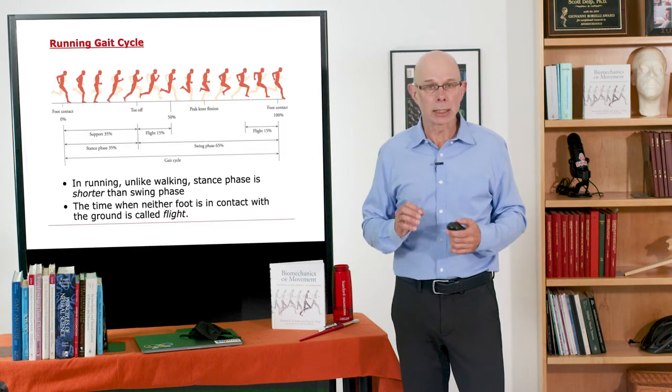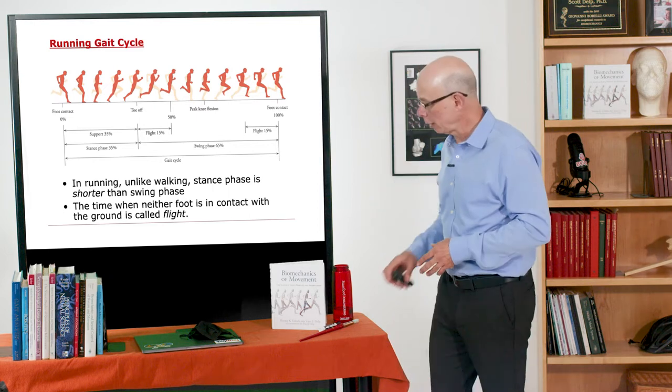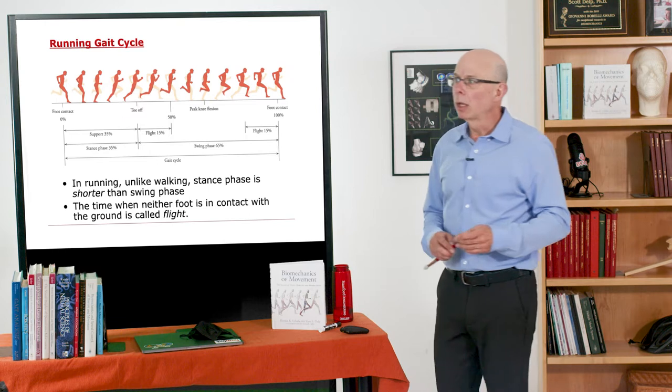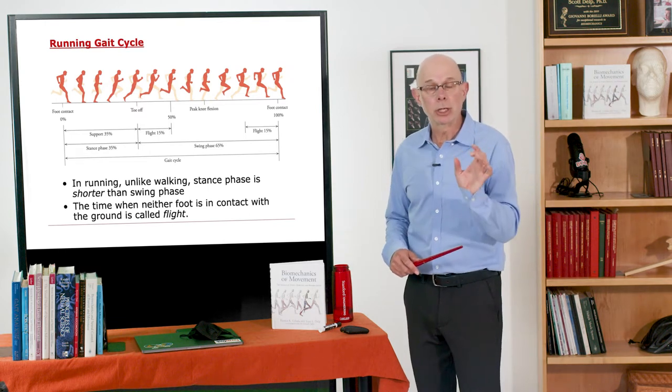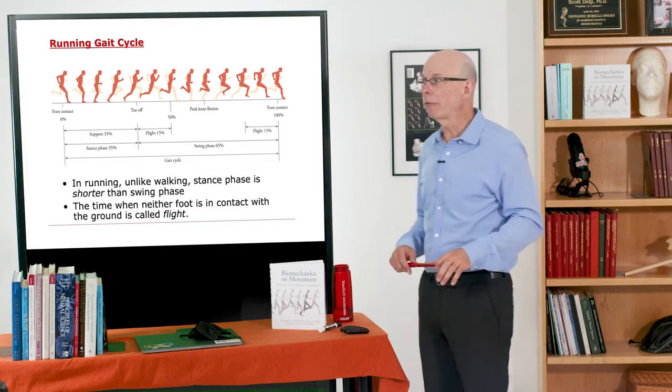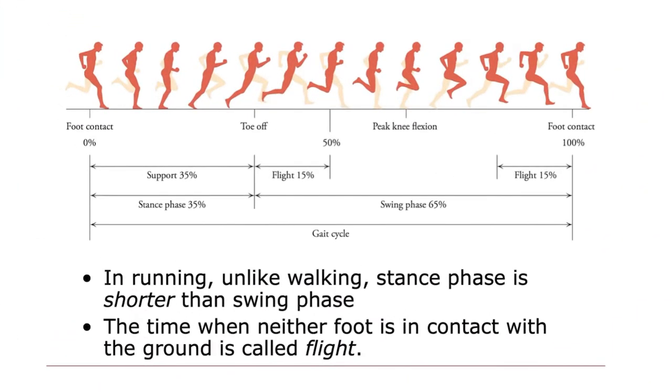Like walking, running is cyclic, and we define a running gait cycle here. The parameters are a little bit different. So unlike walking, the stance phase is shorter than the swing phase, so that we have a flight phase. So there's a time when neither foot is in contact. That's called the flight phase. So at 0% of the running gait cycle, again similar to walking, there's foot contact, and that repeats over here at 100% of the gait cycle. We also have a toe-off phase when the foot leaves the ground. There's peak knee flexion. You see it's much higher than it is during walking.